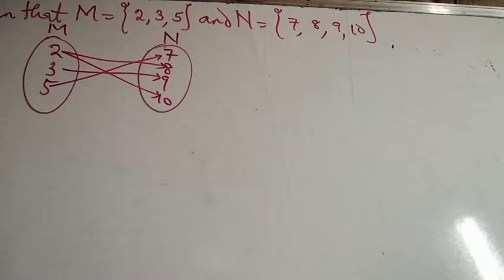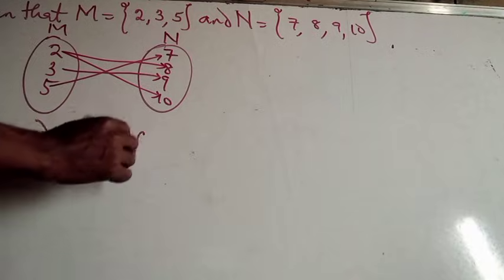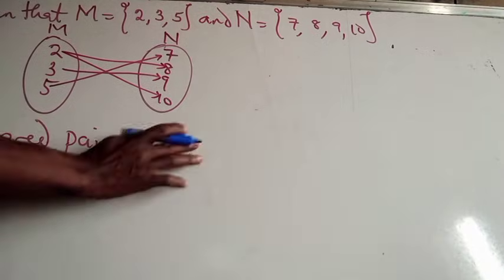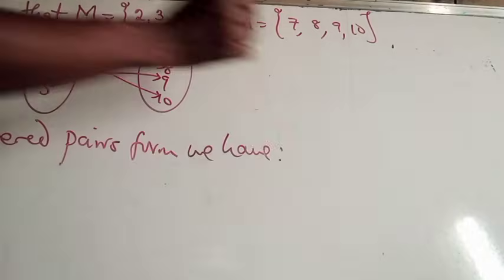Now, let's use the other one, the second form, which is the ordered pairs form. Now, we shall still use this example, but the form is going to be different. For ordered pairs form, we have, let's show this, we have.